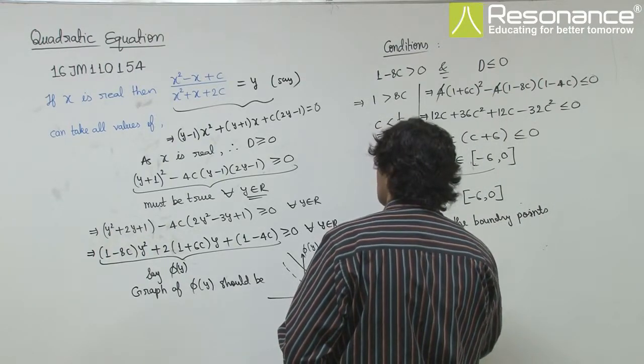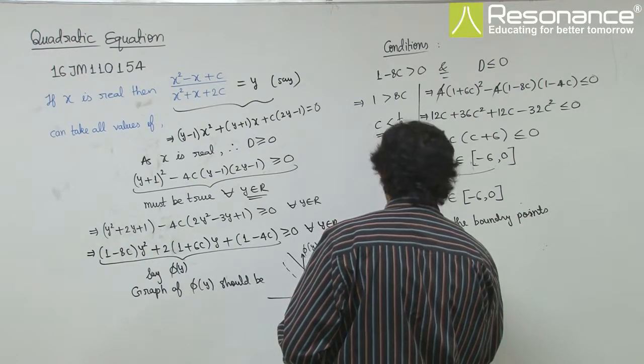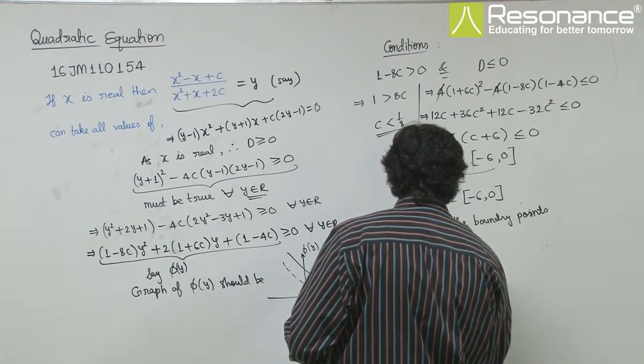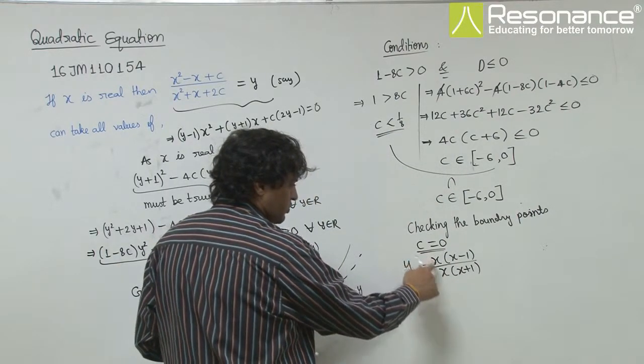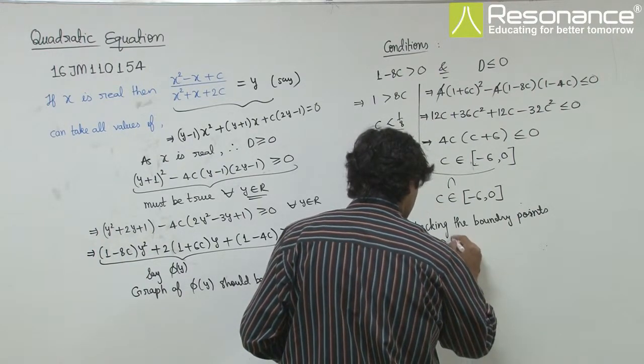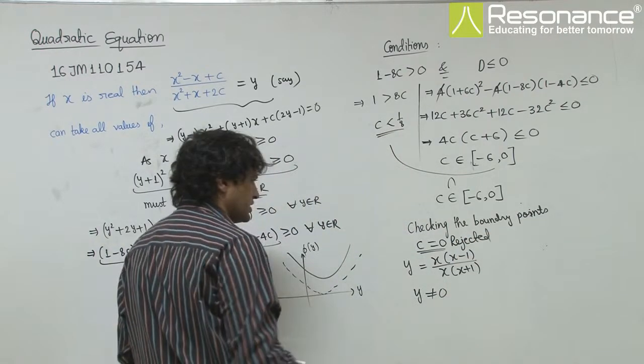So at c equal to 0, a common root appears here, which is a problem, so y cannot be 0. So, c equal to 0 is rejected. We need c values for which y can take all real values.